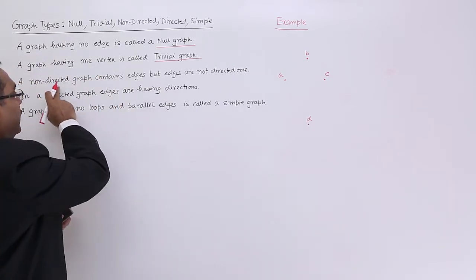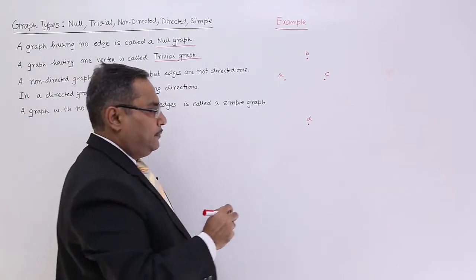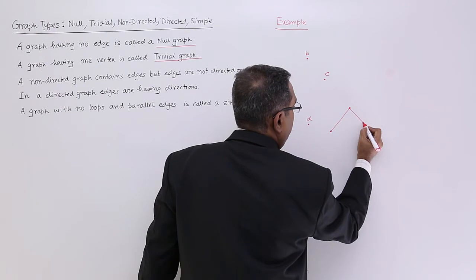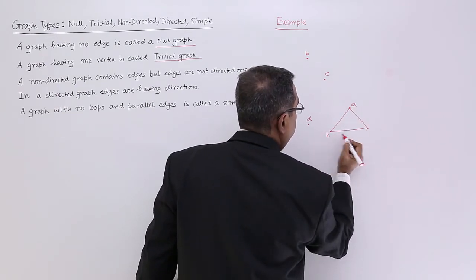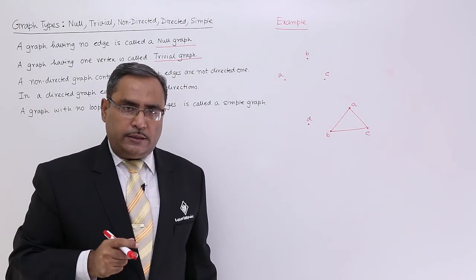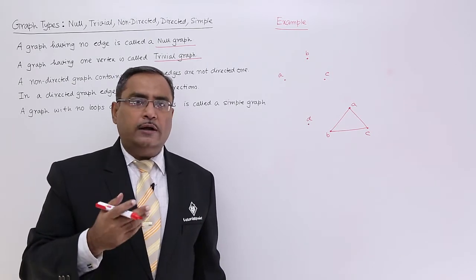A non-directed graph contains edges, but the edges are not directed. For example, consider a graph with three nodes A, B, and C, but these edges do not have any direction. This is called a non-directed or undirected graph.